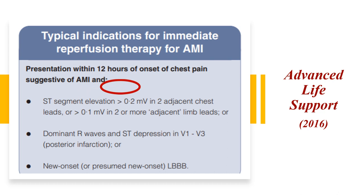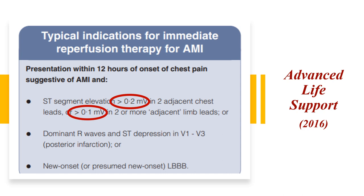The ALS definition states that STEMI is when you get ST elevation of more than 0.2 millivolts — that is two millimeters — in two adjacent chest leads (V1 to V6), and one millimeter in two or more adjacent limb leads (leads 1, 2, 3, AVR, AVL, and AVF). This is the current practice in the United Kingdom.